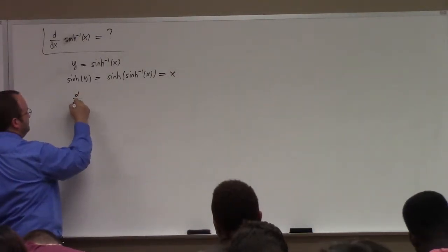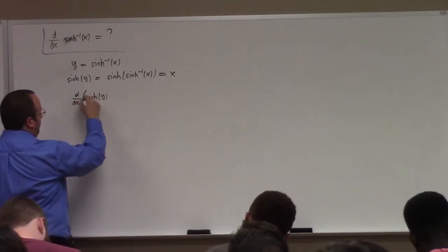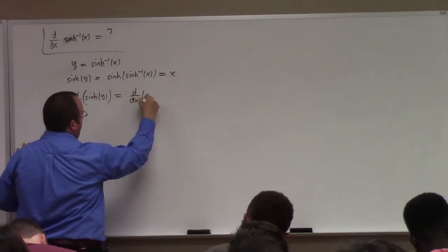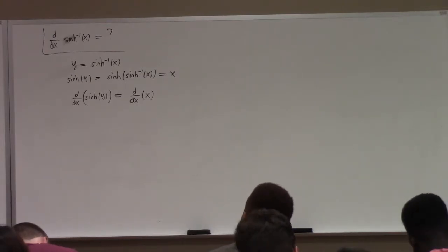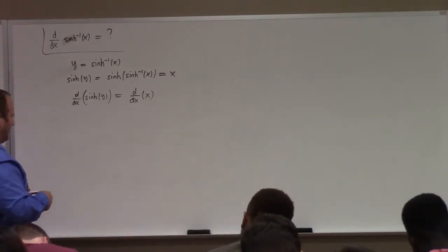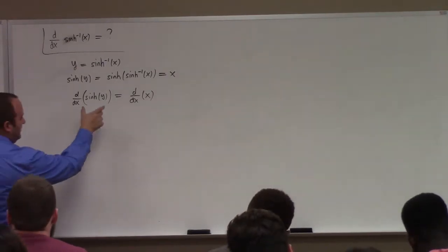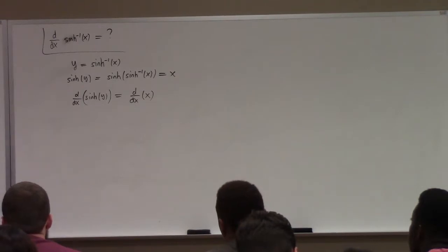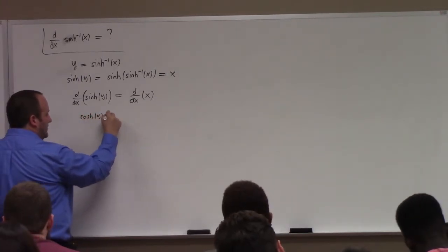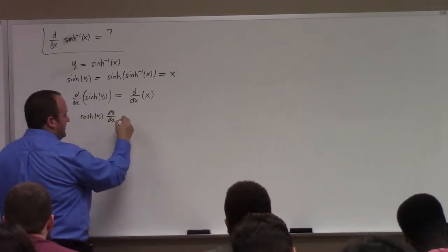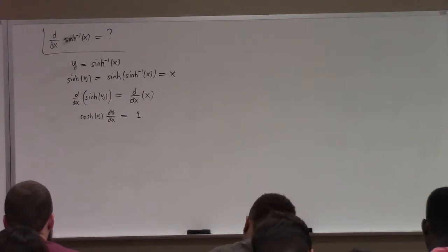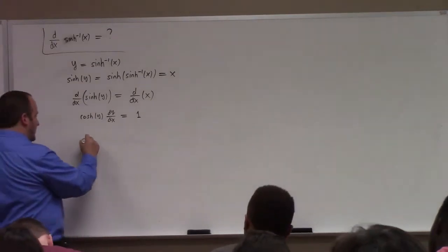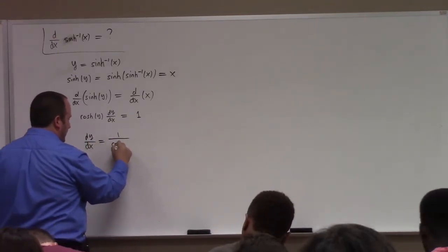The next step is to differentiate sinh of y. We have to use the chain rule because we're differentiating y with respect to x. This gives me cosh of y times dy/dx. And the derivative of x with respect to x is 1. So dy/dx is 1 over cosh y.